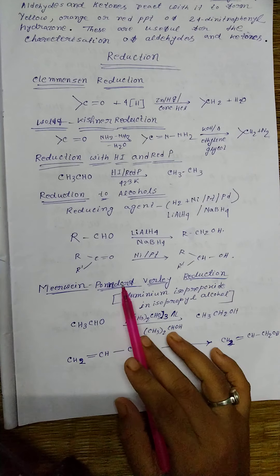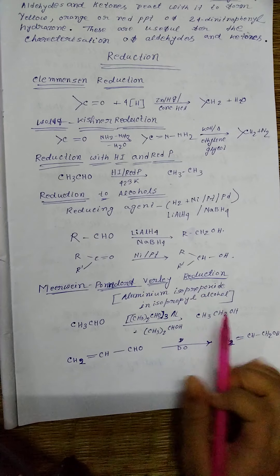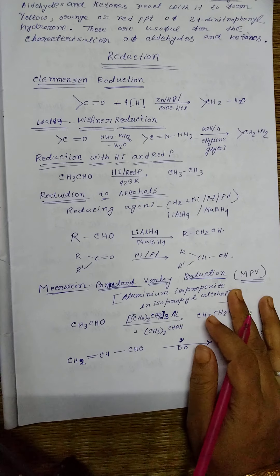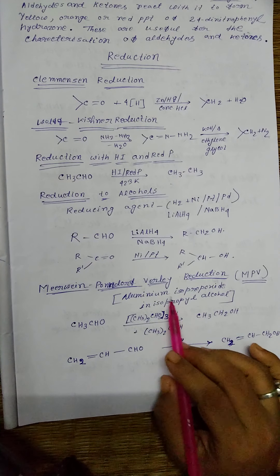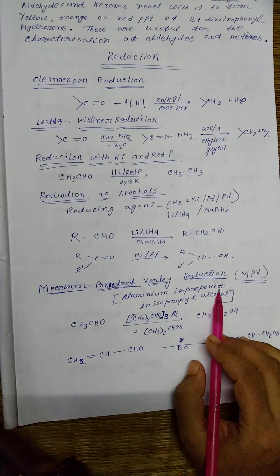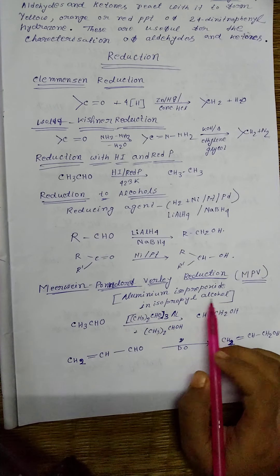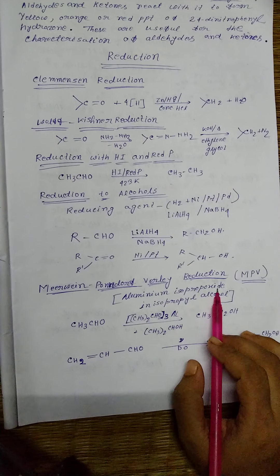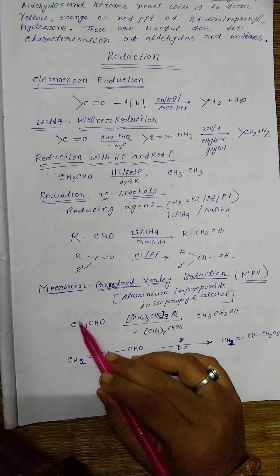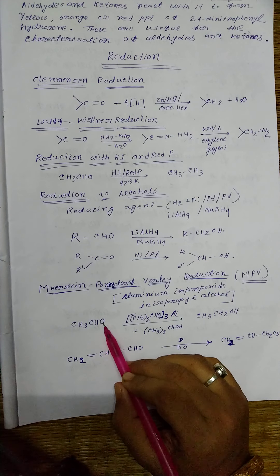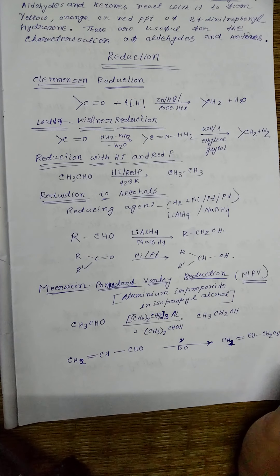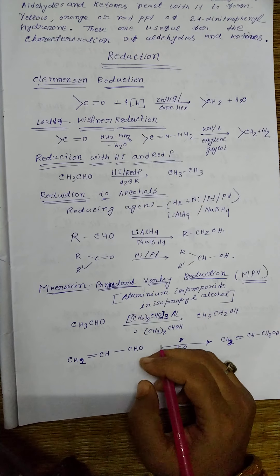Another important reduction reaction is Meerwein-Ponndorf-Verley reduction reaction. This is usually known as MPV reduction. The reducing agent used is aluminum isopropoxide in isopropyl alcohol. Then the CHO aldehyde group is reduced to alcohol group.